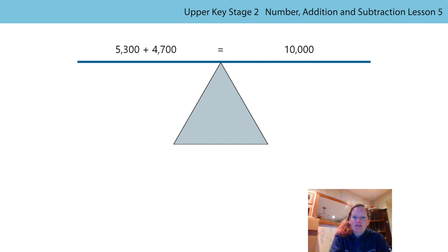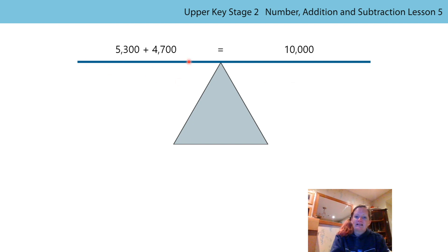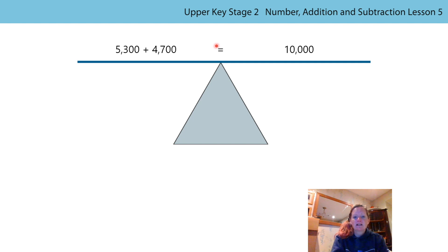Have a look at this — pause the video if you want to and tell me what you notice. That's right, this is just another representation of our bags of potatoes. We've got the two bags here and their total mass was 10,000 grams. We can tell this is a balanced equation because my balance is level, and we've got the equal sign here which tells us that the total value of the left hand side must be equal to the total value on the right hand side. And we're going to use this representation now to solve some problems.